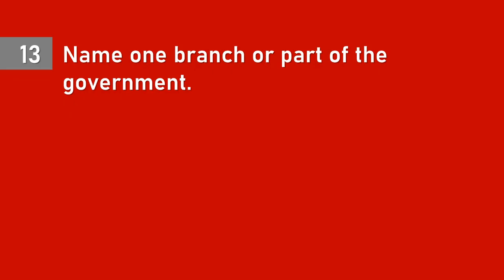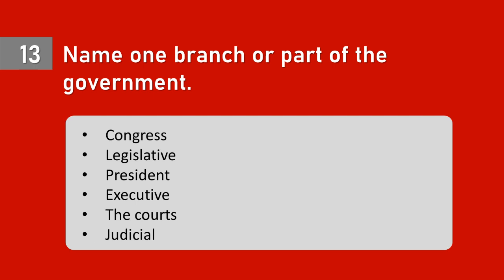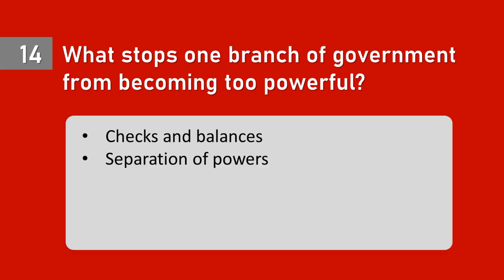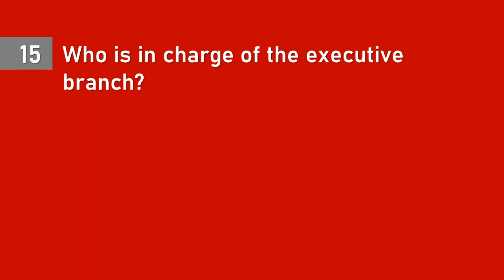Section B: System of Government. Question 13: Name one branch or part of the government. Congress — legislative; President — executive; the courts — judicial. Question 14: What stops one branch of government from becoming too powerful? Checks and balances, separation of powers.